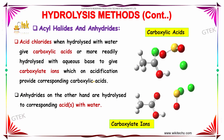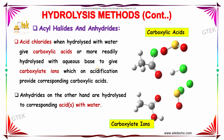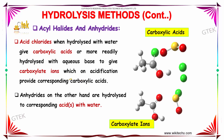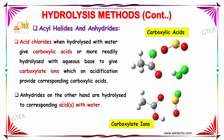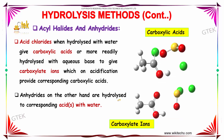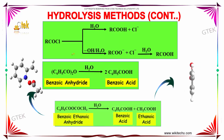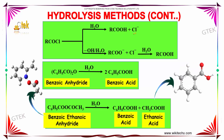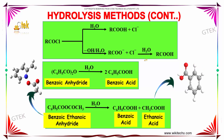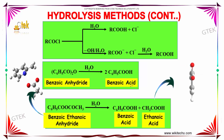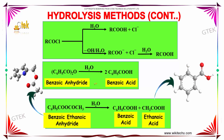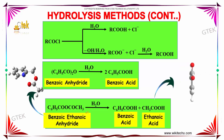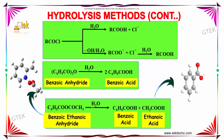Acid chlorides, when hydrolyzed with water, give carboxylic acids, or more readily hydrolyzed with aqueous base to give carboxylate ions, which on acidification provide the corresponding carboxylic acids. Anhydrides, on the other hand, are hydrolyzed with water. For example, RCOCl on hydrolysis produces a carboxylic acid with Cl- ion. When benzoic anhydride is hydrolyzed, we get two moles of benzoic acid. When benzoic ethanoic anhydride is made to hydrolyze, we obtain a mixture of benzoic and ethanoic acids.